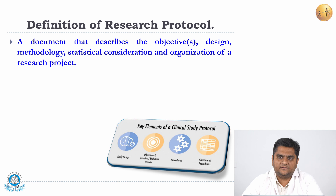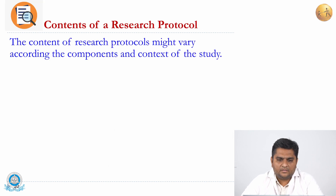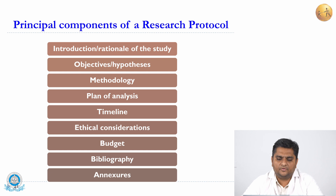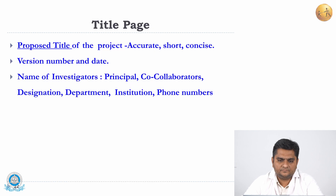A research protocol is a document that describes the objectives, design, methodology, statistical considerations, and organization of a research project. The contents may vary according to the components and context of the study, but there are some principal components — the backbone of the research protocol — that should be followed properly. These components are: introduction or rationale of the study, objectives and hypothesis, methodology, plan of analysis, timeline, ethical considerations, budget, bibliography, and annexures.